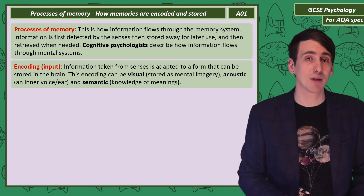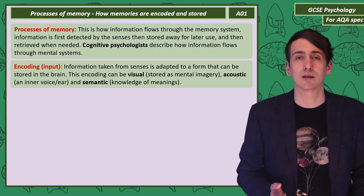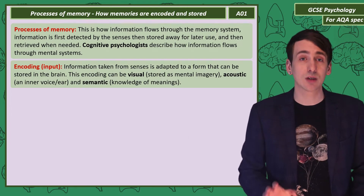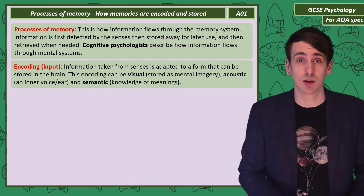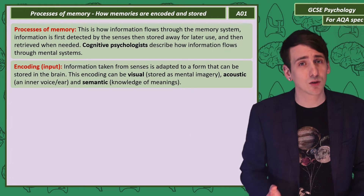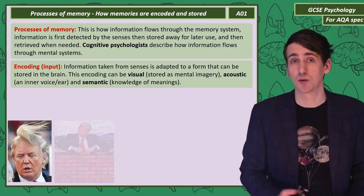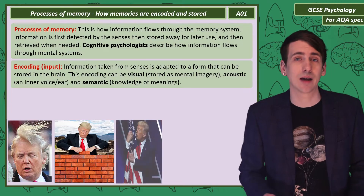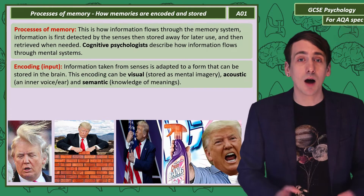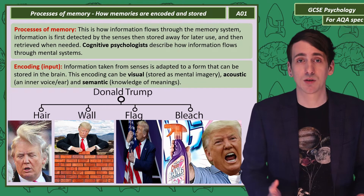The last one, semantic, is a little tricky. The information is in the form of meaning. Donald Trump — it's just a name, right? Well, chances are that name has meaning to you. It's linked to a bunch of general knowledge facts. Facts that jump to my mind are: he has unusual hair, he wants to build a wall, and occasionally hugs flags. And he thinks injecting bleach is kind of a good idea. Those are the general knowledge facts that link to my memory — they're semantic memories.